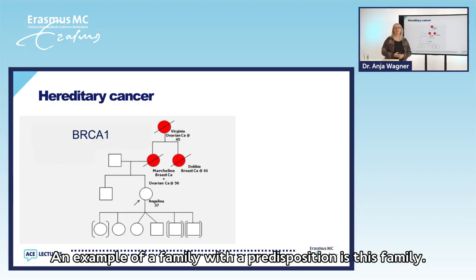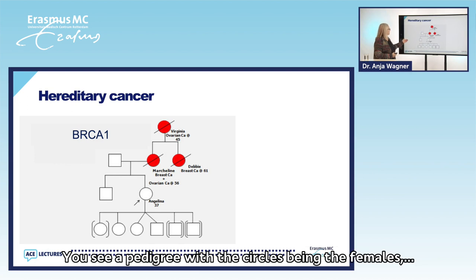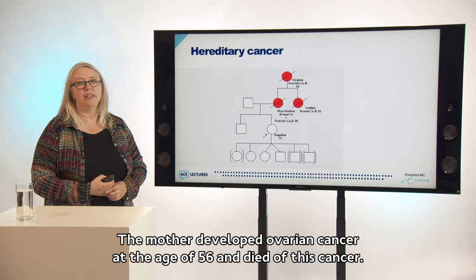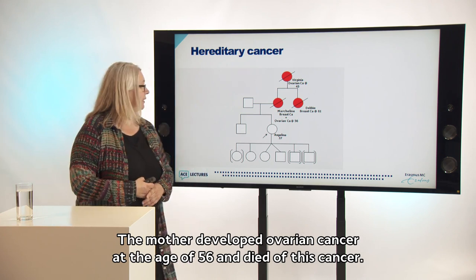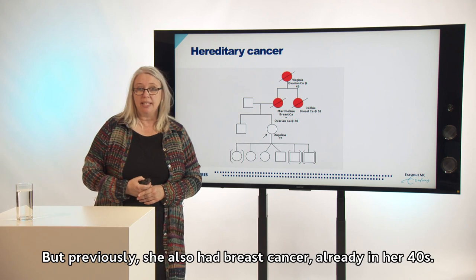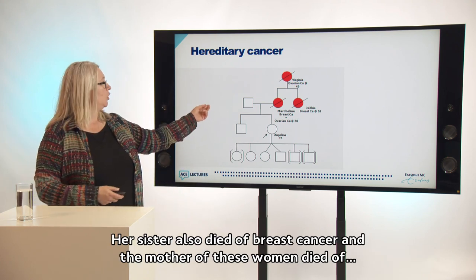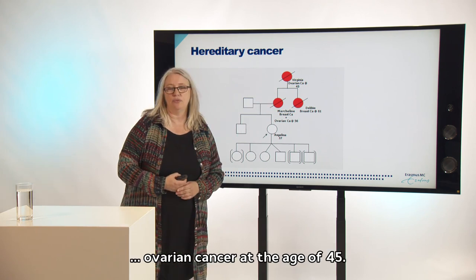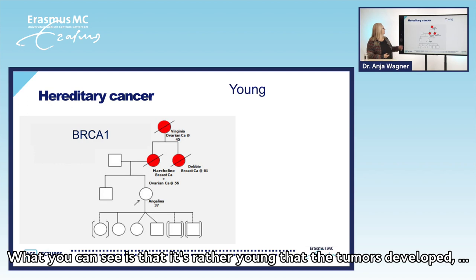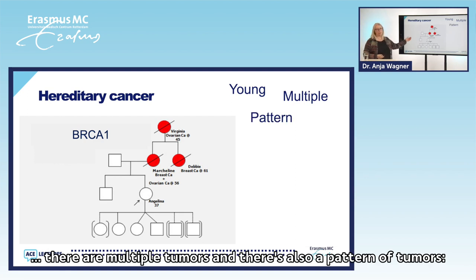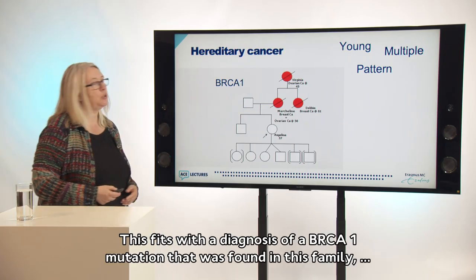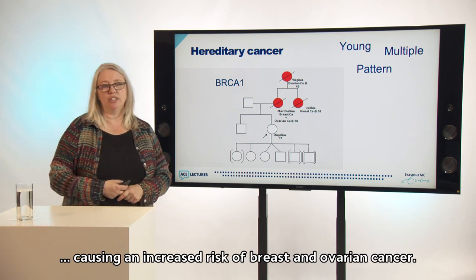An example of a family with a predisposition is this family. You see here a pedigree with circles being the females and squares being the males. These two parents have two children. The mother developed ovarian cancer at the age of 56 years and she died of this cancer. Previously she also had breast cancer, already in her forties. Her sister also died of breast cancer, and the mother of these women died of ovary cancer at the age of 45. What you can see is that the tumors develop rather young, there are multiple tumors, and there's a pattern: a combination of breast and ovary cancer. This fits with the diagnosis of a BRCA1 mutation that was found in this family, causing an increased risk of breast and ovary cancer.